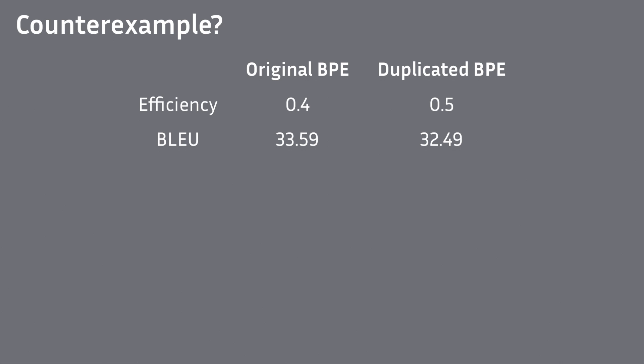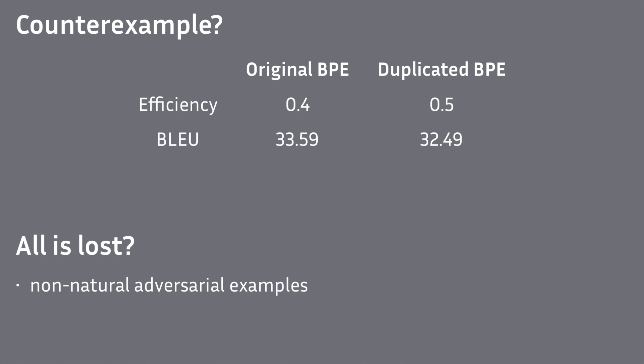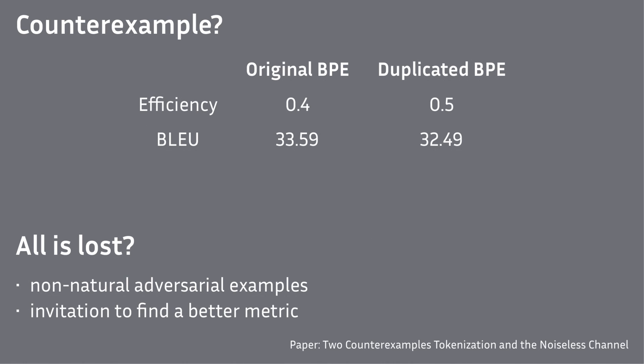For the original BPE, we have efficiency of 40%, but for the new adversarial one we have efficiency of 50%. Our hypothesis says the model should also be better. However, the opposite is the case, making this a counterexample to our hypothesis. Do not despair — this example was specifically crafted to break the hypothesis and is very likely not going to occur in the wild.